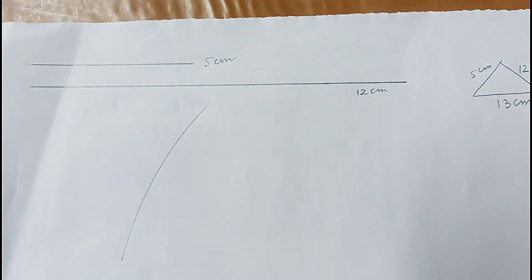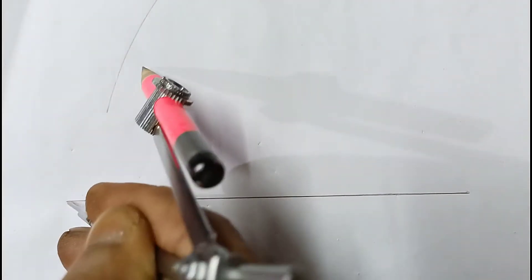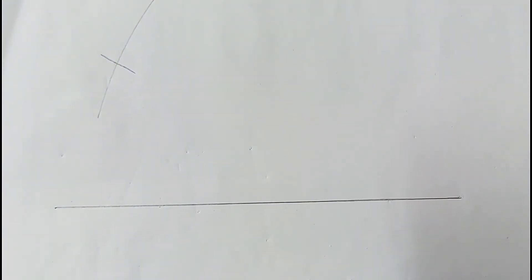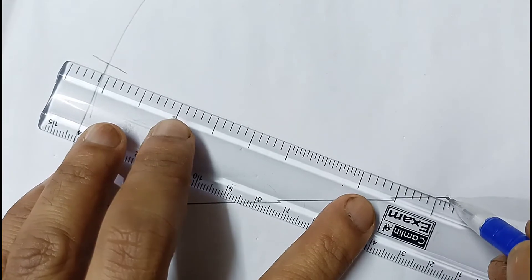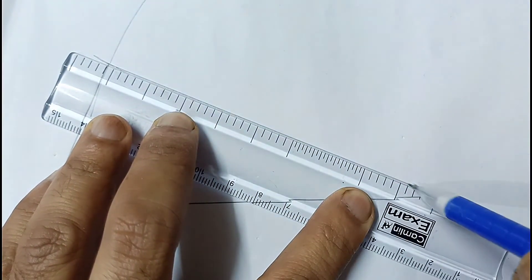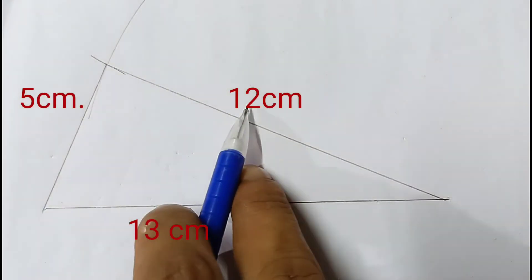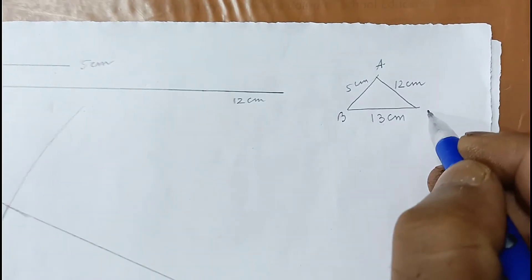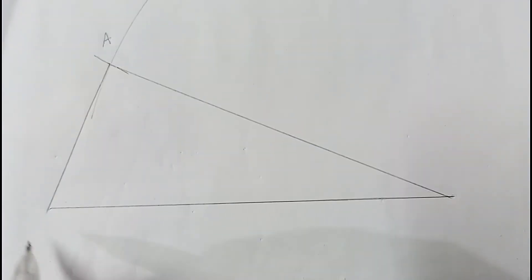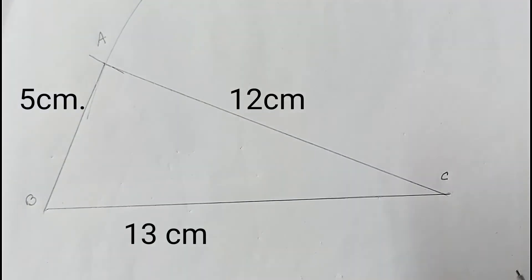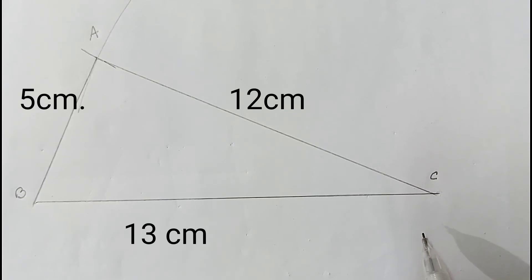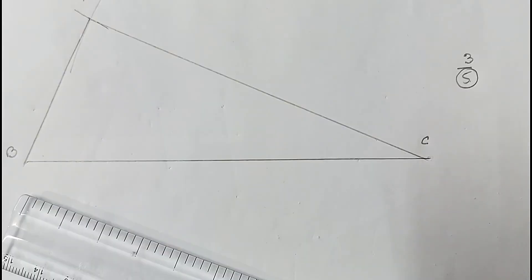After measuring this length, from each endpoint I draw arcs. We join the intersection point with both endpoints to complete the triangle. This side is 13 cm, this one is 12 cm, and this one is 5 cm. Since no name is given, we call the vertices A, B, and C. The first part is done — we have constructed the triangle with sides 5 cm, 12 cm, and 13 cm.